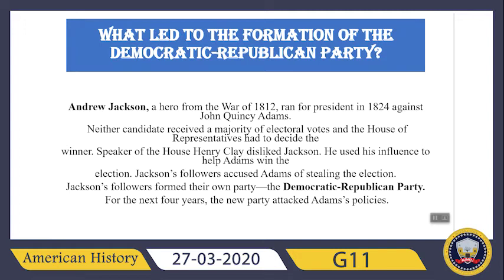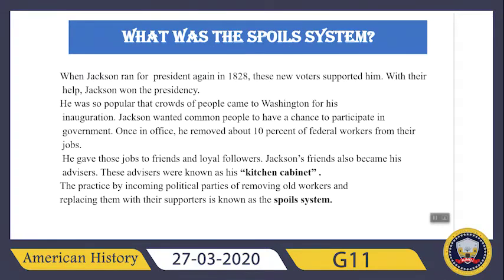Jackson's followers accused Adams of stealing the election, and finally formed their own party — the Democratic Republican Party. For the next four years, this new party attacked Adams's policies. Jackson ran for president again in 1828, and with the support of new voters he won the presidency. He was so popular that crowds of people came to Washington for his inauguration.